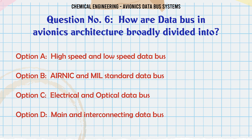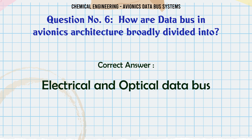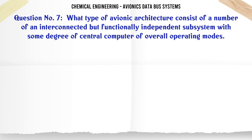Which of the following is false with respect to Airnic? A. Define system MIL-STD data bus, C. Electrical and optical data bus, D. Main and interconnecting data bus. The correct answer is Electrical and optical data bus.